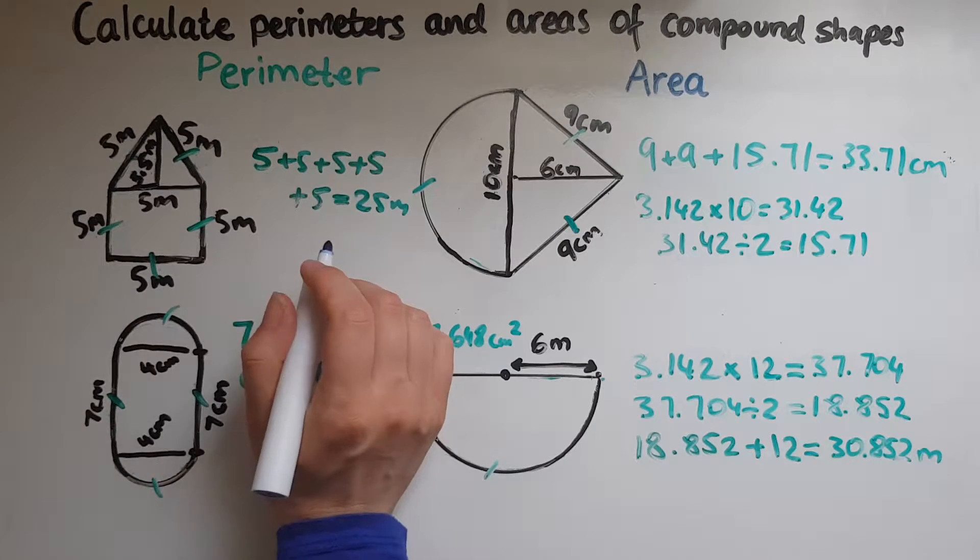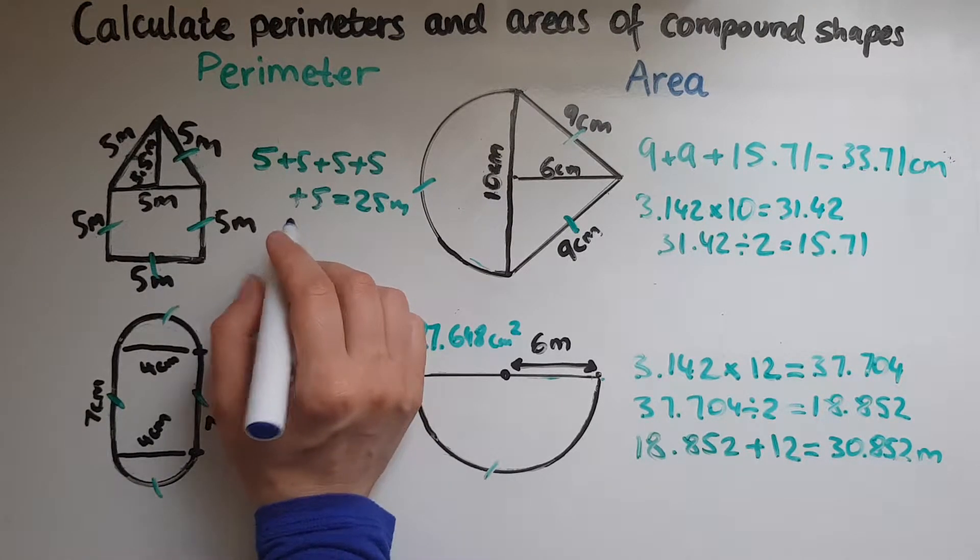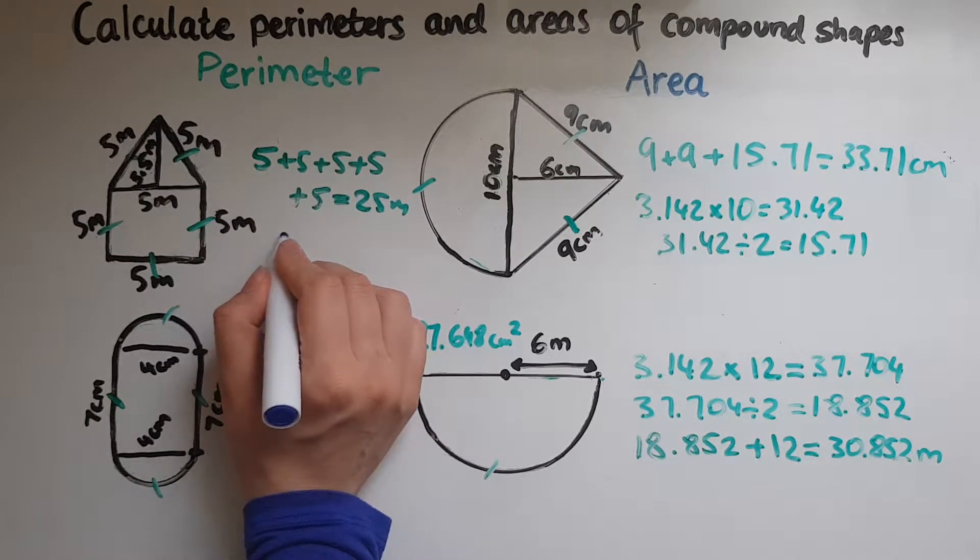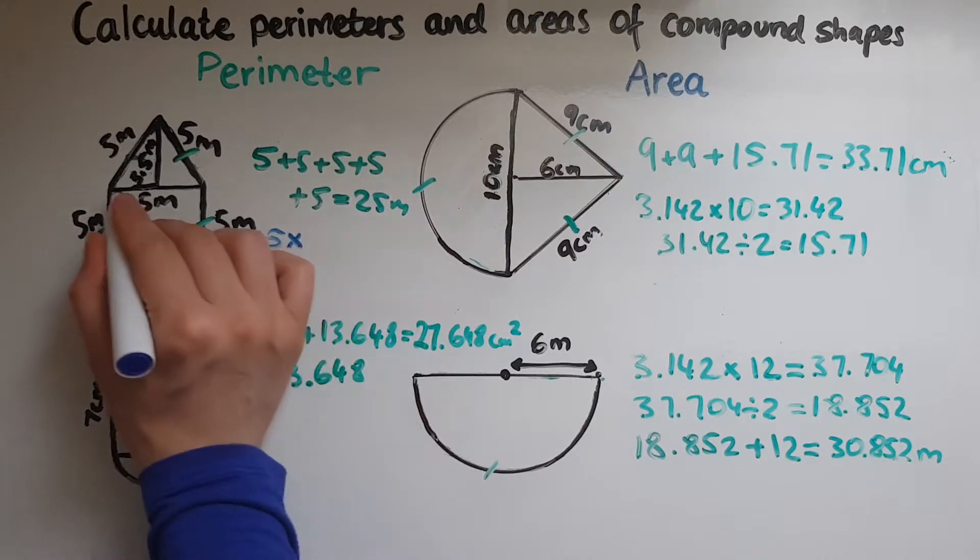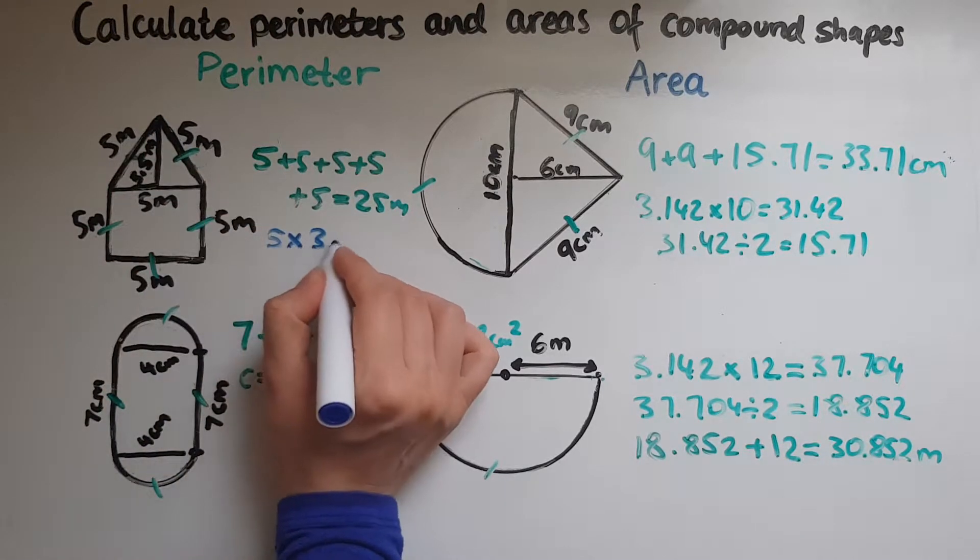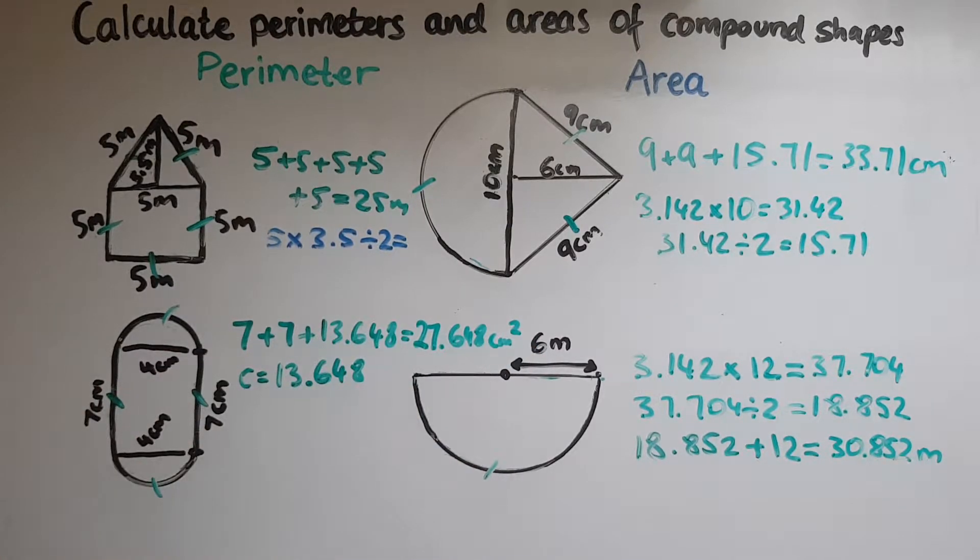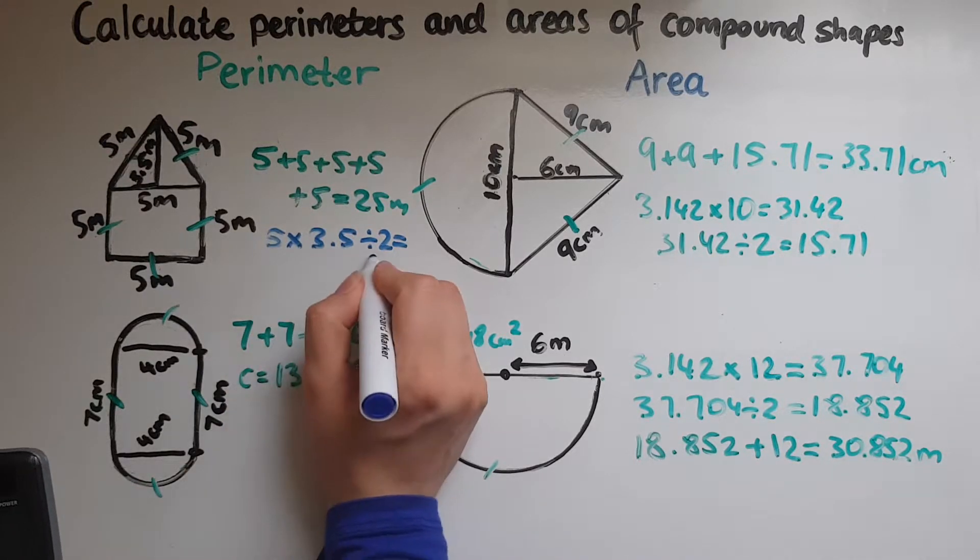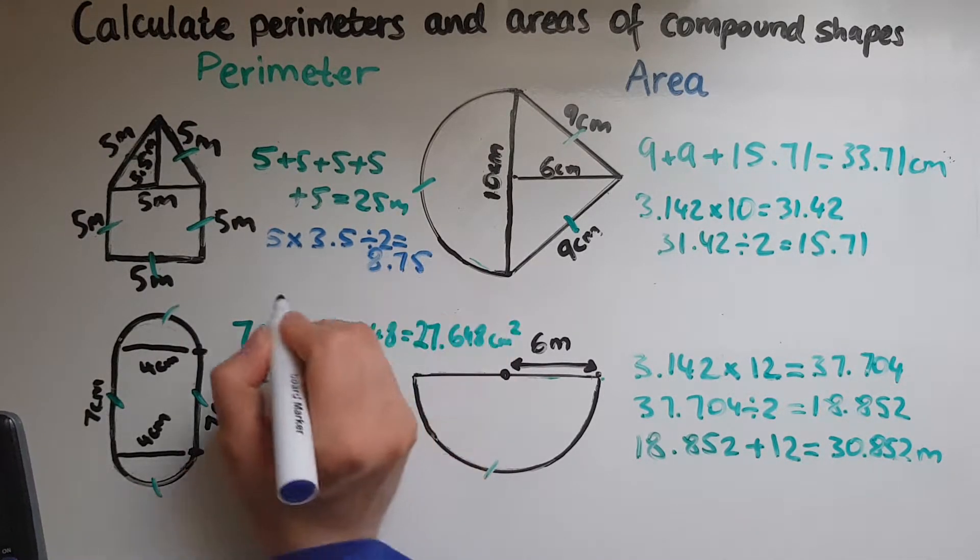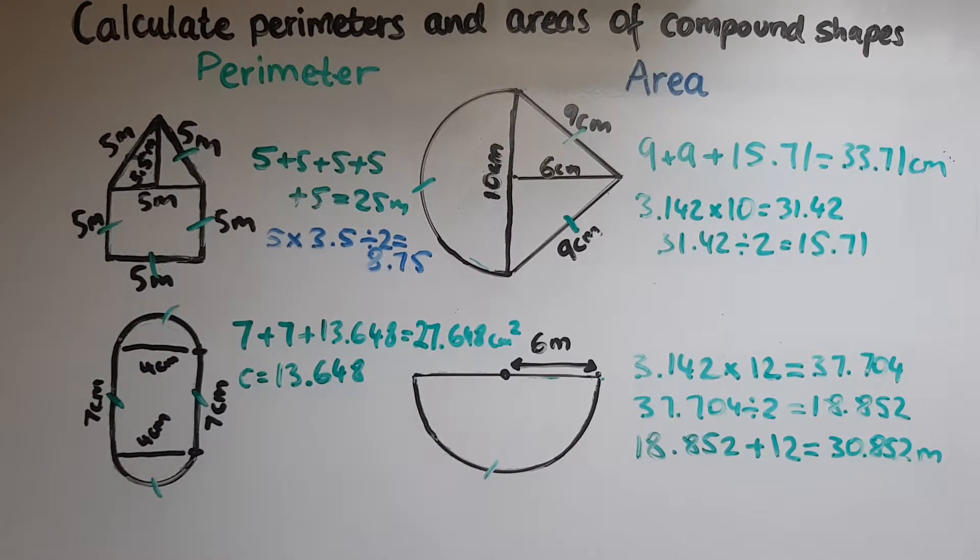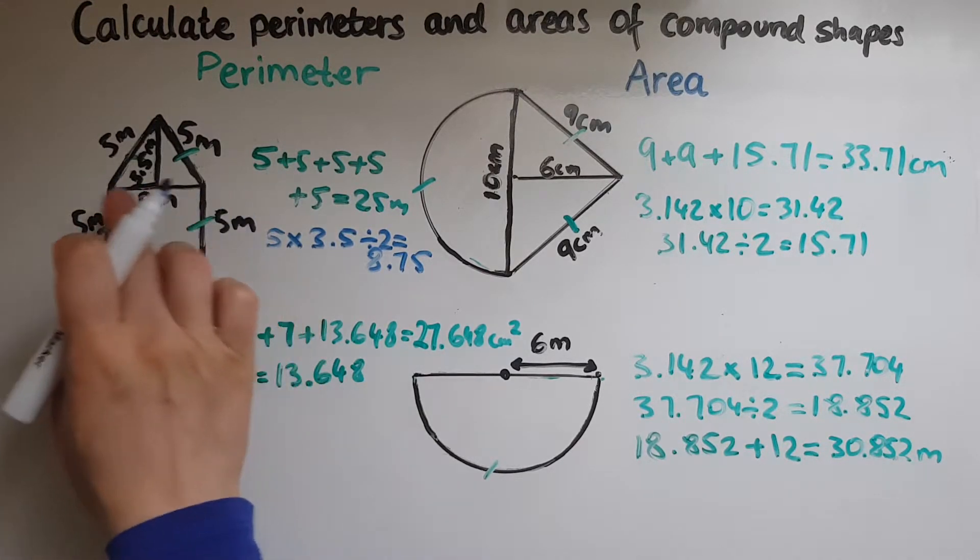I'll go five times three point five divided by two. So five times three point five divided by two gives us eight point seven five.